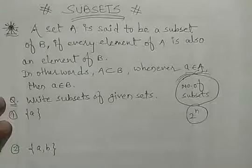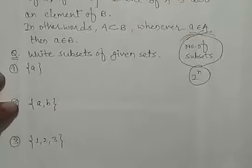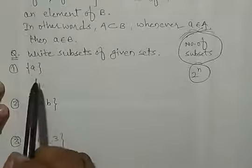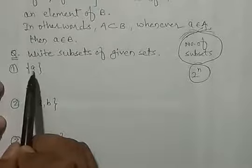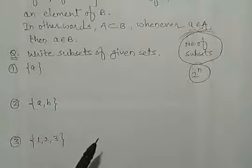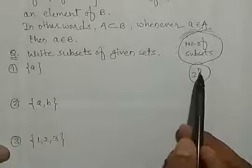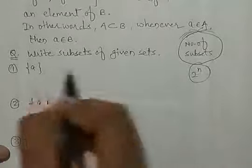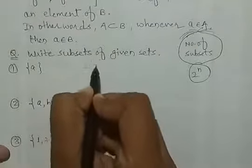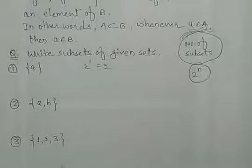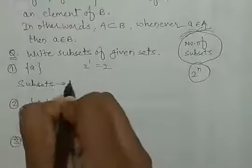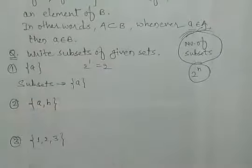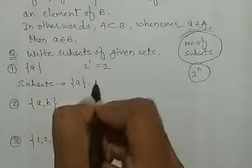For example, first — we have to write the subsets of a set which has only one element. So when we put 1 at the place of N, then 2 to the power 1 is equal to 2, means इसके 2 subsets होंगे. अब वो 2 subsets कौन से होंगे? एक तो हर एक set खुद का subset होता है, इसलिए एक तो यह खुद element हो जाएगा.